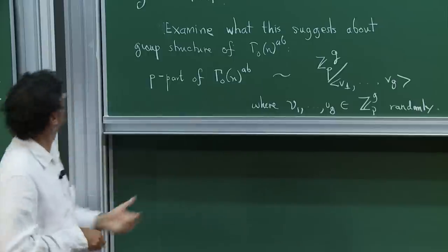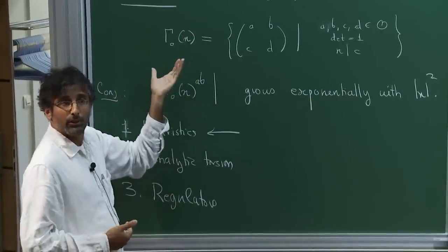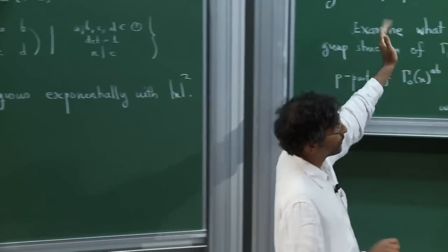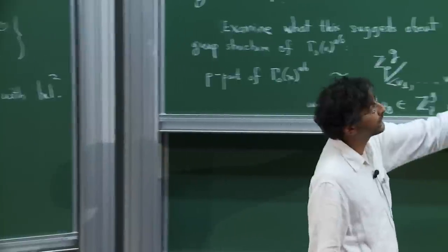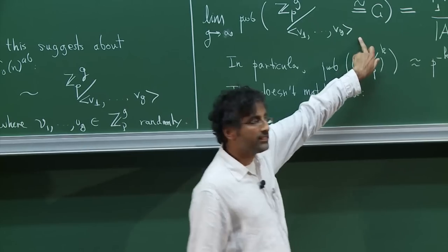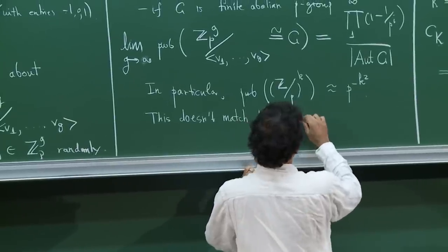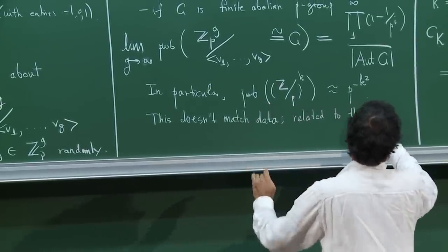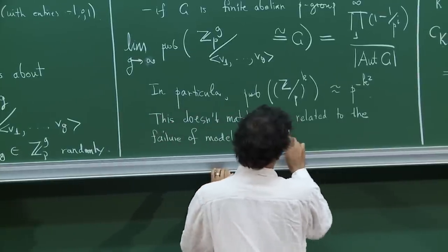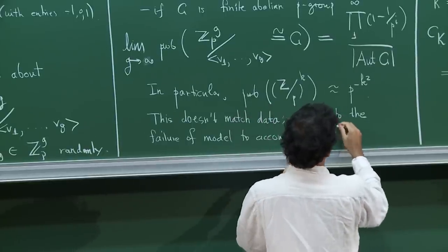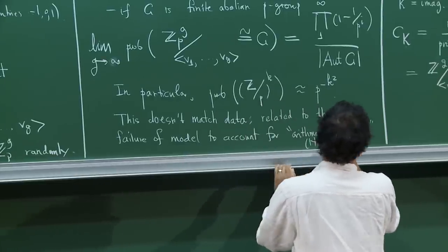If you take something like a hyperbolic 3-manifold which is not arithmetic, and take its fundamental group and go through the same story — in fact, Nathan Dunfield and Thurston showed that under a certain model of random such groups, you really do get this Cohen-Lenstra distribution. The fact that this doesn't seem to hold here is related to the arithmeticity — it's related to the failure of the model to account for arithmetic symmetries, namely the Hecke operators.